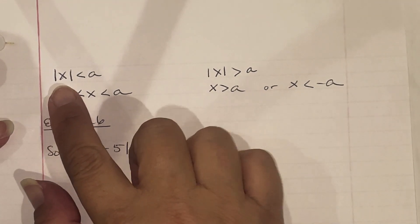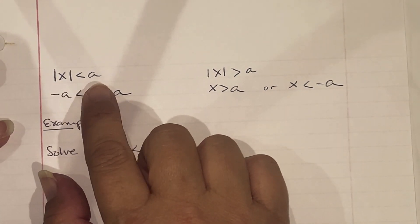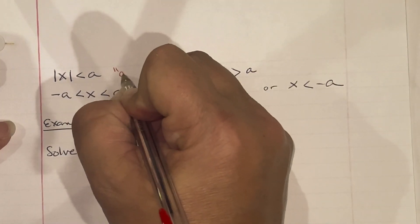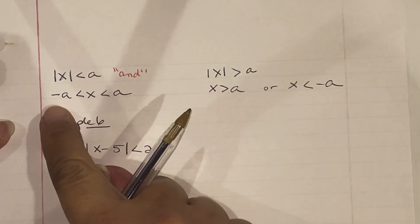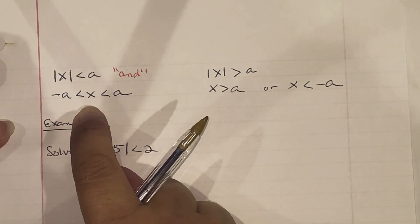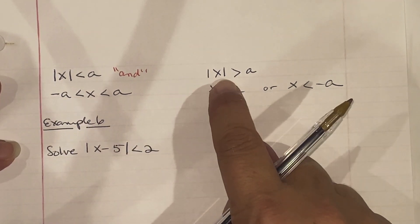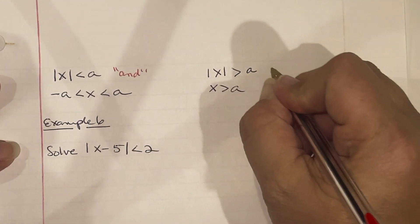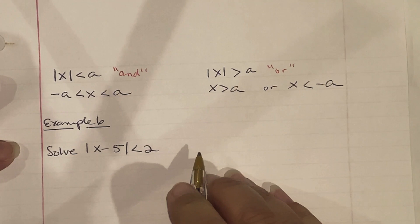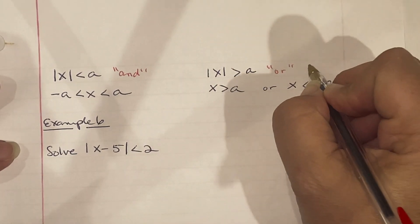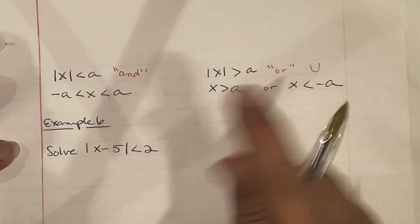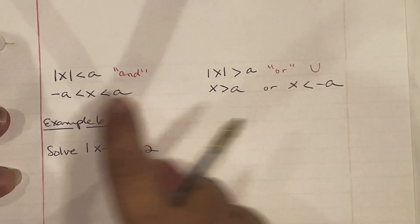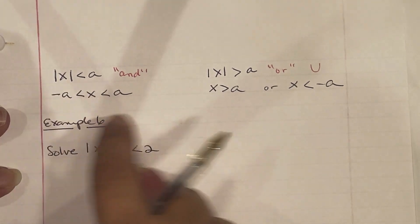When you see the absolute value of x less than a, this is known as an AND statement — written as negative a less than x less than a. If the absolute value of x is greater than a, this is an OR statement with a union symbol. The less-than case represents intersection — they overlap.